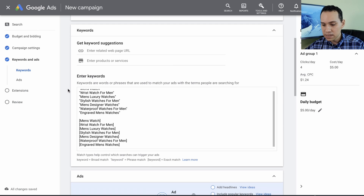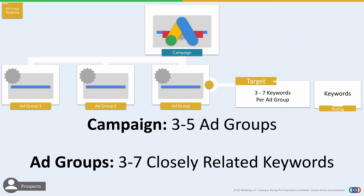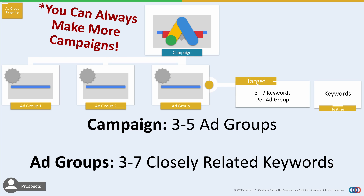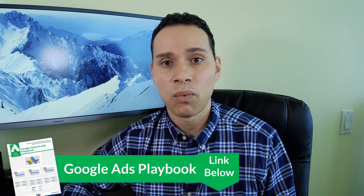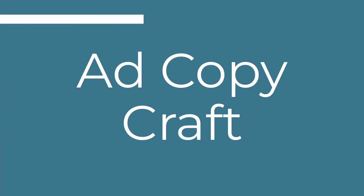In this setup interface, the new interface only allows you to set up one ad group. But going back to our diagram, you're actually going to want to set up three to five ad groups and have no more than three to seven keywords each. You can always make more campaigns in the future. As a general rule of thumb, the more specific you are with your keywords, campaigns, ad groups, and ads, the better your performance will be. Link in the description to our playbook that goes through ideas for other ad groups and campaigns.